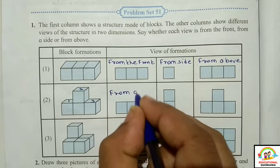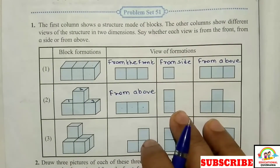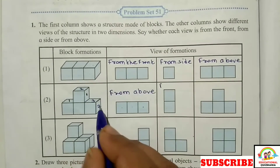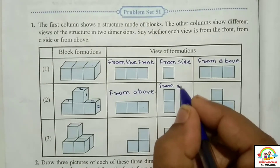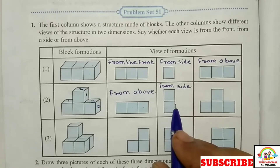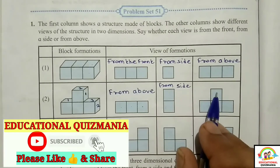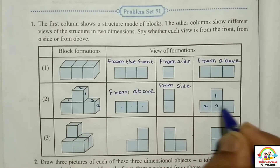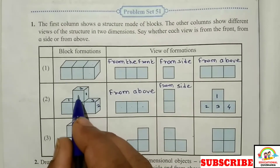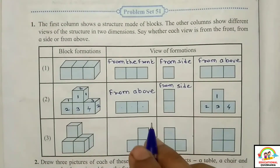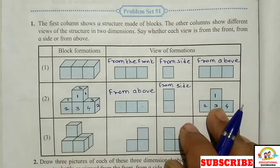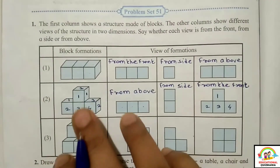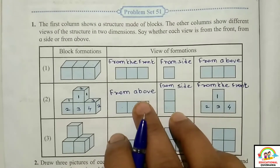Now look at the next view — this view is from the side, so it is from the side. And this view — when you look at this block formation from the front, one, two, three, four blocks are visible from the front, and here also from the front one, two, three, four — four blocks are seen from the front, so this view is from the front.